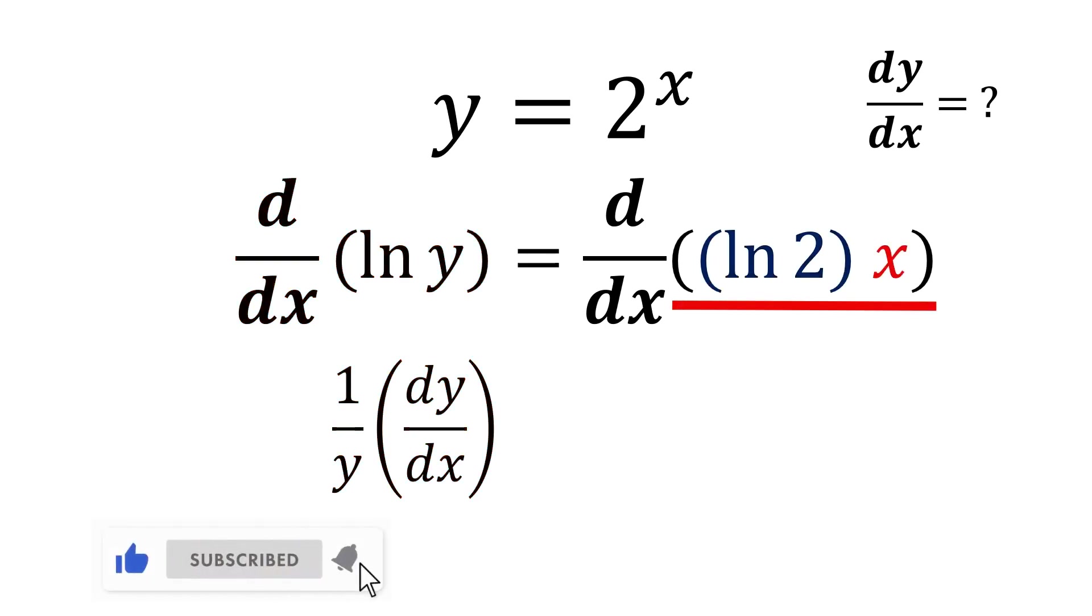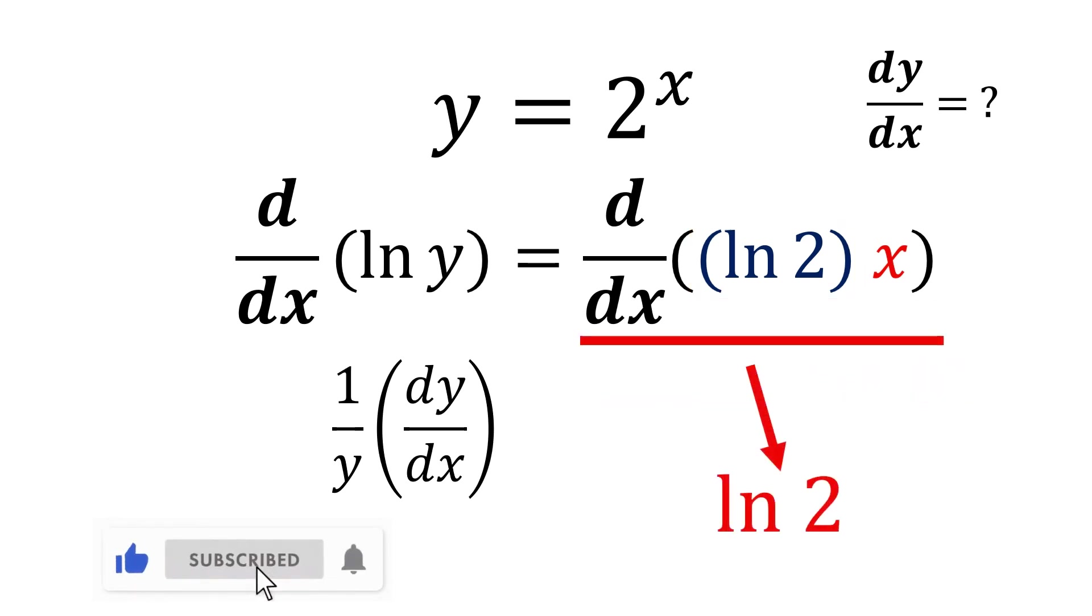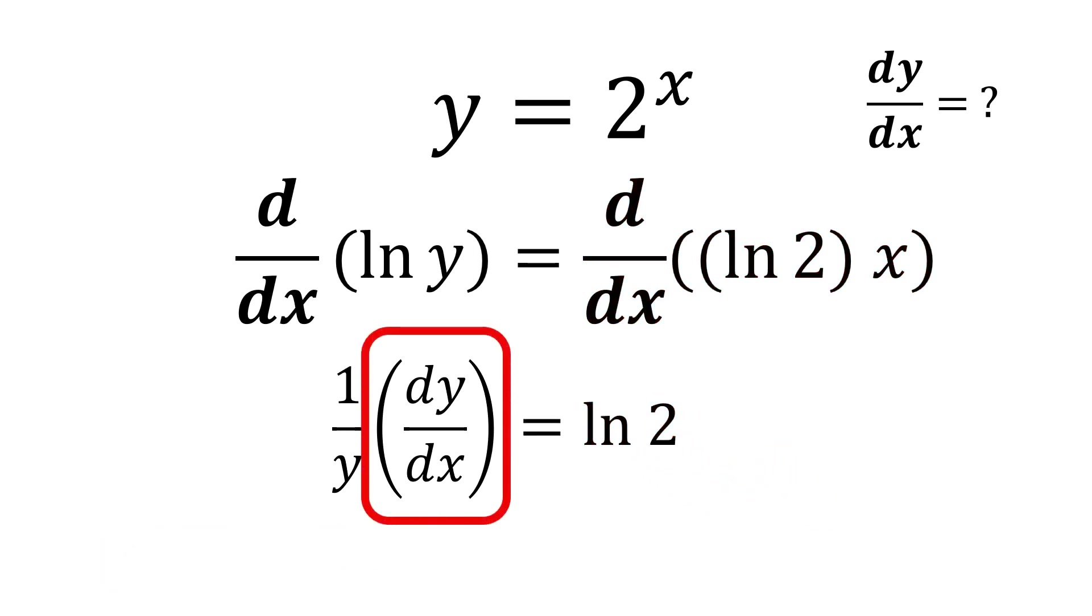For differentiating ln 2 multiply by x, notice that ln 2 is actually a constant. So we will be getting ln 2 for the derivative.